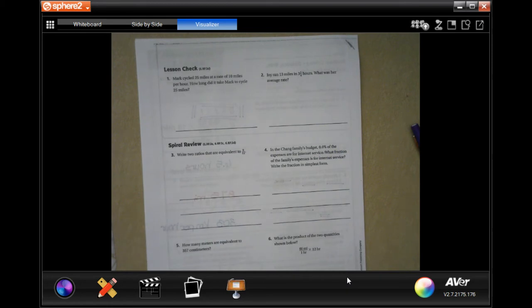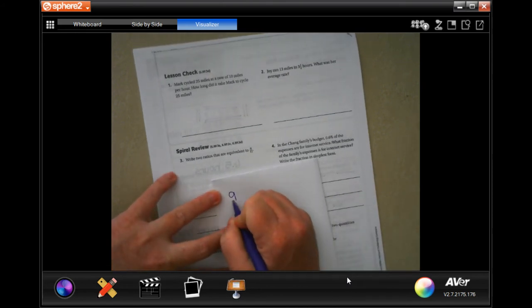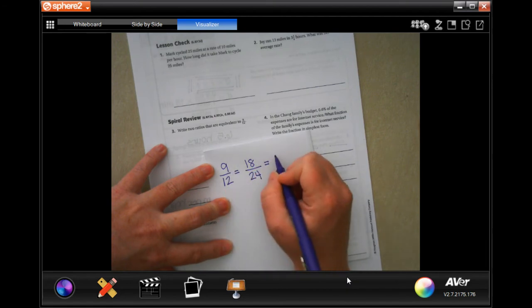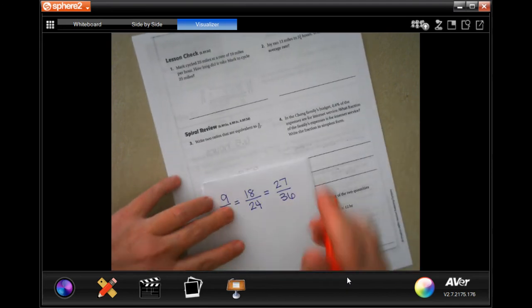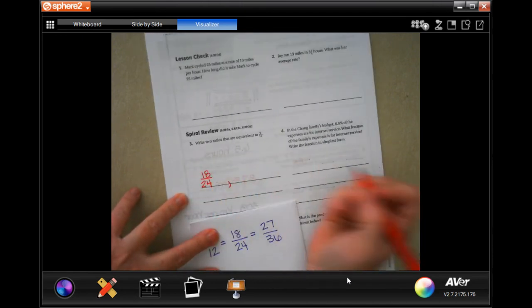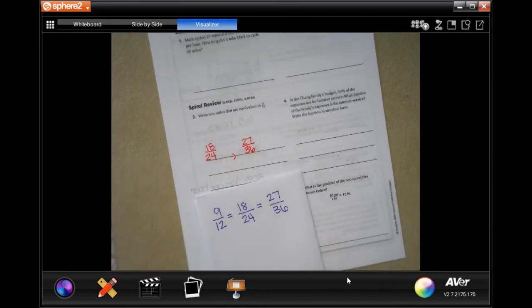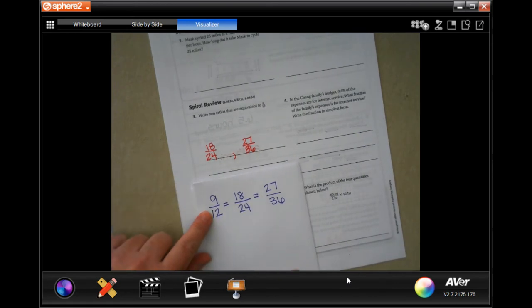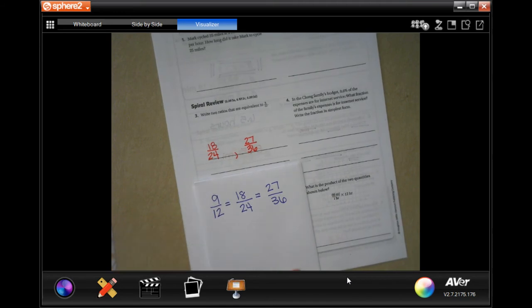Number 3 says to write 2 ratios that are equivalent to 9-12. So, 9-12. Well, if I do 9 times 2, that's 18, and if I do 12 times 2, that's 24. If I do 9 times 3, that's 27, and if I do 12 times 3, that's 36. So you have 18 over 24, and you have 27 over 36. Instead of reducing the fraction, we're making it bigger. We could also divide those both by 3 and do 3 over 4. That's acceptable, too.